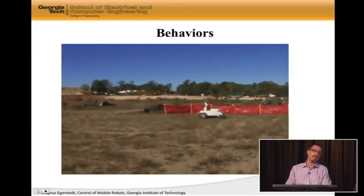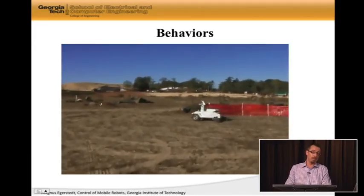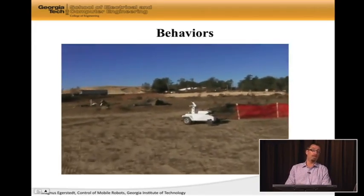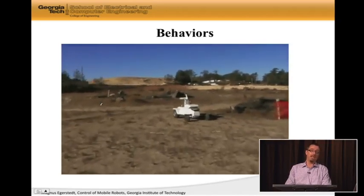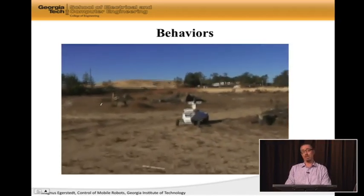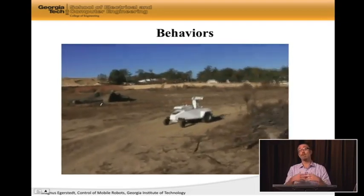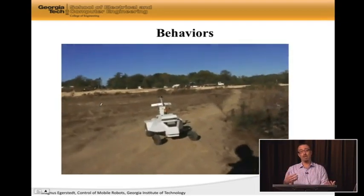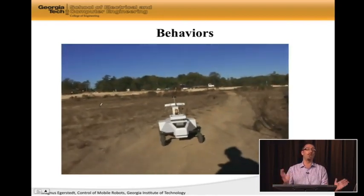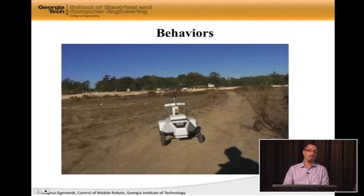Now we're running the exact same thing with behaviors. We're following a plan—it is in fact a follow-plan behavior—and then when something pops up we're switching to an avoid-obstacle behavior. So now the same thing shows up to the robot. Instead of the robot sitting around thinking for a long time, it just avoids it, and once it's clear it goes back to following the plan. This is an example of why behaviors are really useful.